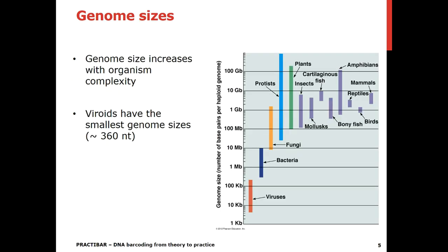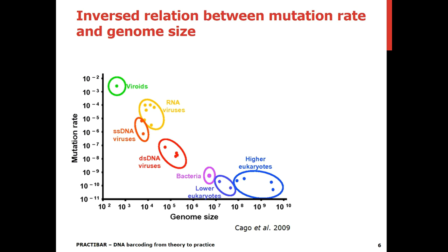Typically, genome sizes increase with the complexity of an organism. In the framework of plant health, the smallest genomes we can find are those of viroids, which consist of only 360 nucleotides. This is in contrast to plant genomes, which can go up to over 100 gigabases. Generally, an inverse relation between the genome size and mutation rate is observed, so typically smaller genomes tend to have a higher mutation rate compared to larger genomes, which tend to have a lower mutation rate.